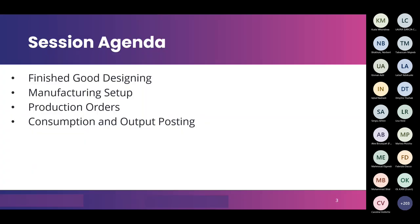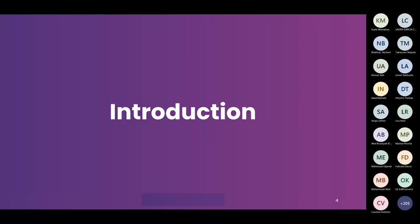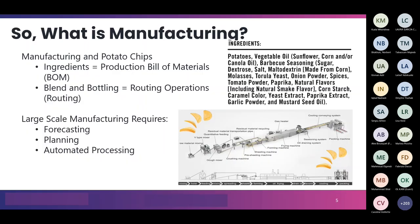Quick agenda: let's talk about finished goods — designing them and what that means — along with some of the setups we have to do to get the BC manufacturing engine started. We'll go through production orders, see how that works, and then round out our conversation with consumption and output posting. There's also an advanced session later that takes everything to a deeper level.